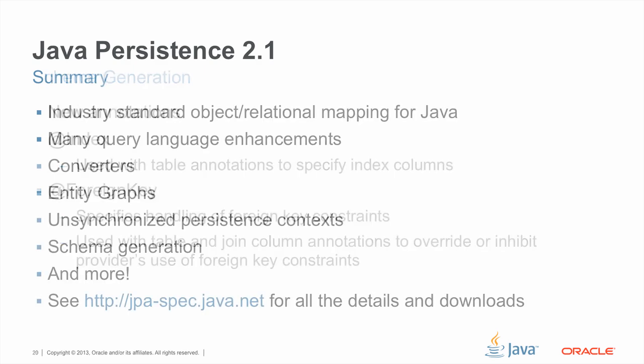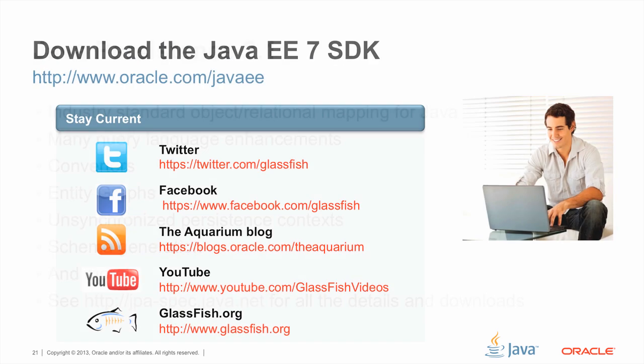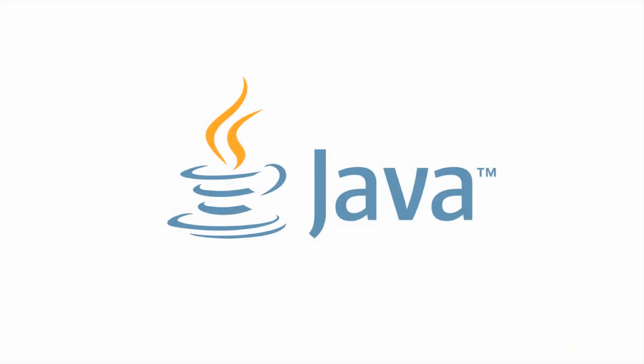So I've given you a summary of some of the new features of this release. To sum up, Java Persistence is the industry standard object relational mapping API for Java applications. We've added many query language enhancements, support for type converters, entity graphs, unsynchronized persistence contexts, and schema generation. You can access the JPA spec project on java.net for all the details, including the expert group archives and discussions, and a host of download material. For more information on Java EE 7, I'll leave you with a number of pointers on how you can stay current, and a pointer to our GlassFish reference implementation. Thank you.